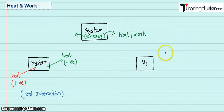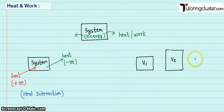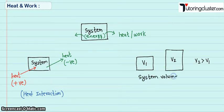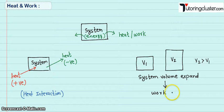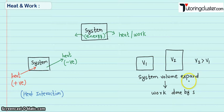Now let's say the volume of the system is V1. After a certain time the volume increases to V2, and obviously V2 is greater than V1 — that means the system volume has expanded. In this case, work is said to be positive, meaning work is done by the system and it is considered as positive.